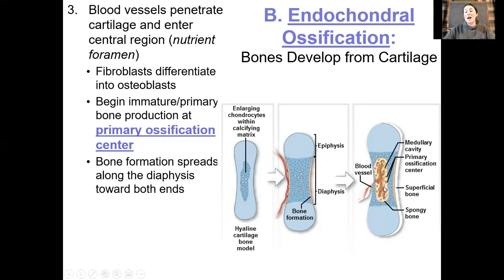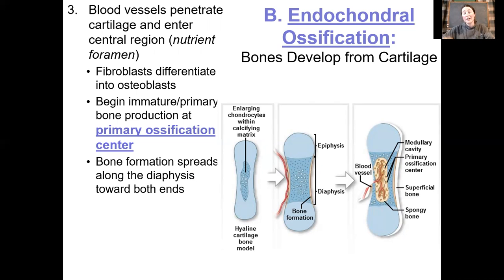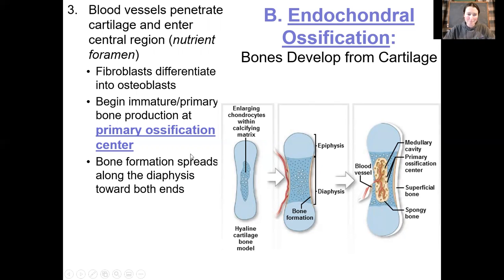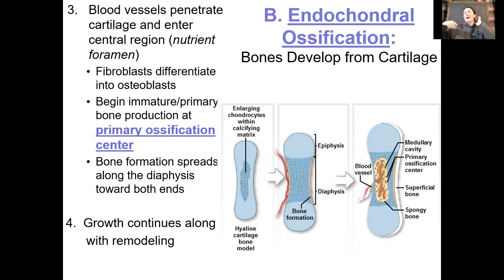Unlike intramembranous ossification, in endochondral ossification we have one single primary ossification center. In flat bones, we have lots of little osteoblasts differentiating all around; here we start making bone in the diaphysis — that is the primary ossification center. It starts right in the middle of the bone and then spreads out proximally and distally at the same time, along the diaphysis towards both ends. This is the laying down of immature or primary bone — lots of collagen, ossified to an extent, but not super strong yet.